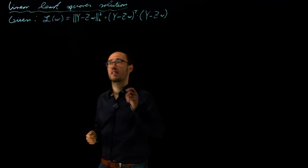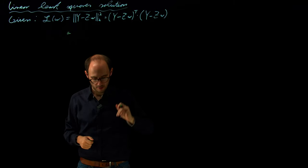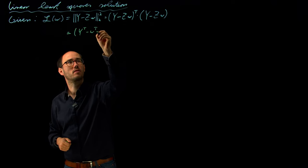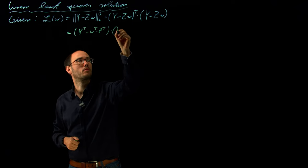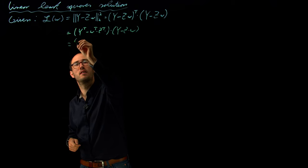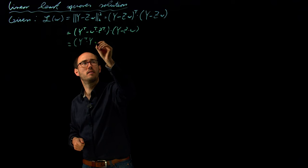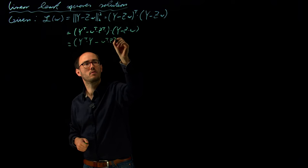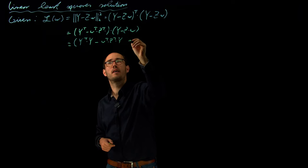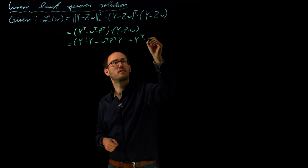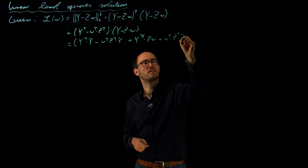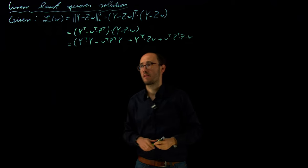In order to solve this, we can basically just continue multiplying this out. That is y transpose minus w transpose times z transpose, times the parenthesis y minus z times w. From that what we get is y transpose times y, minus w transpose times z transpose times y, minus y transpose times z w, plus w transpose times z transpose times z times w.